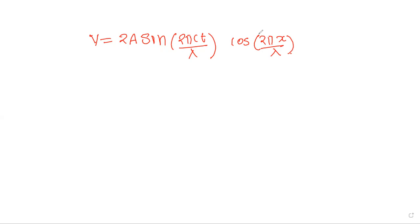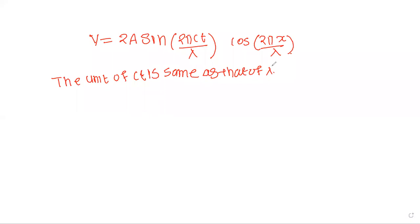The first statement is: the unit of ct is same as that of lambda. Midun, how will you tackle this? There is no need to cancel anything — just determine whether ct and lambda have the same unit.